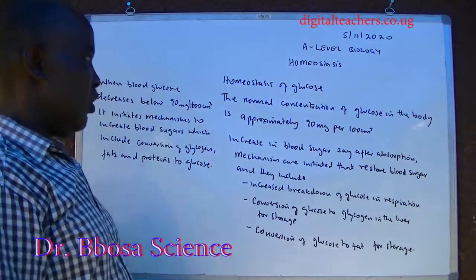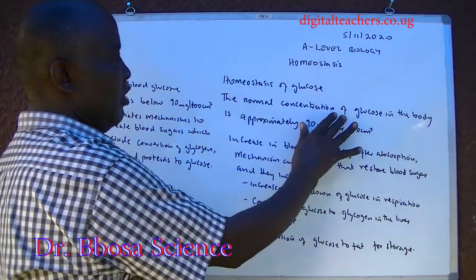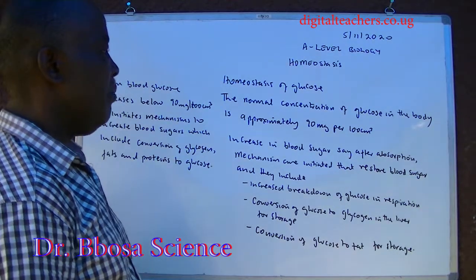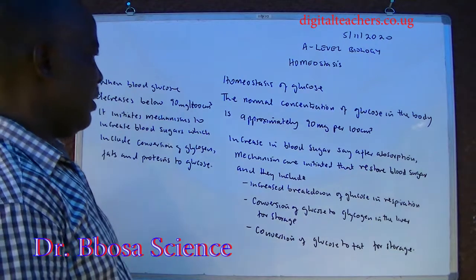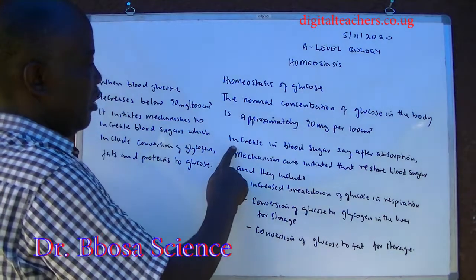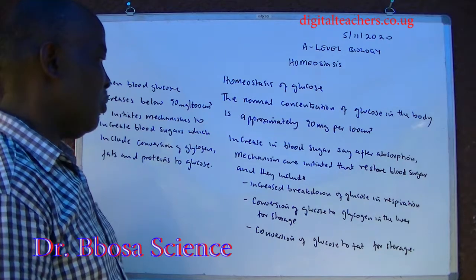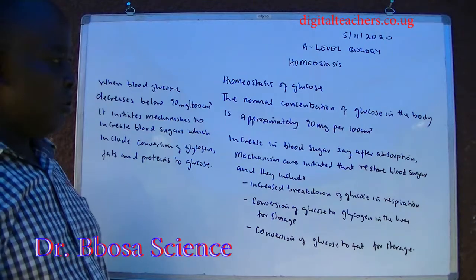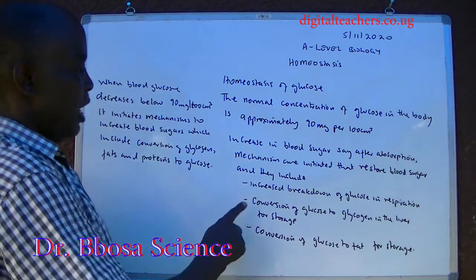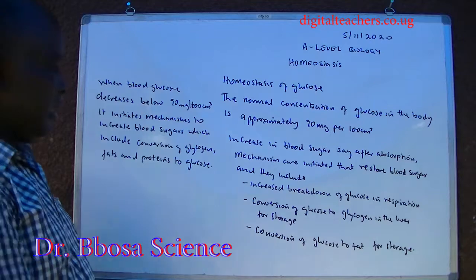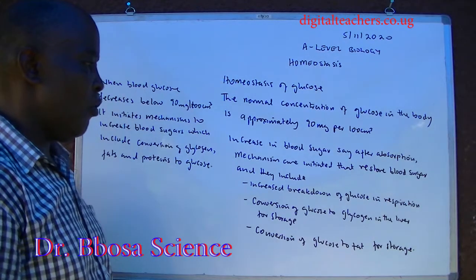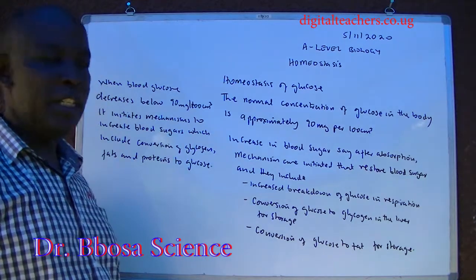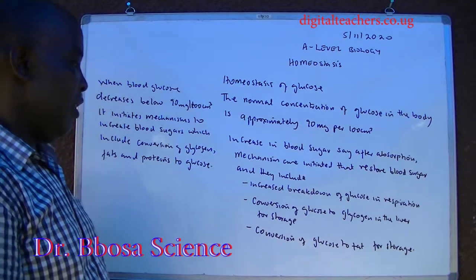Homeostasis of glucose. The normal concentration of glucose in the body is approximately 90 mg per 100 cm cubed. When blood glucose increases, after absorption, mechanisms are initiated that restore blood glucose, and they include increased breakdown of glucose in respiration and conversion of glucose to glycogen in the liver for storage.